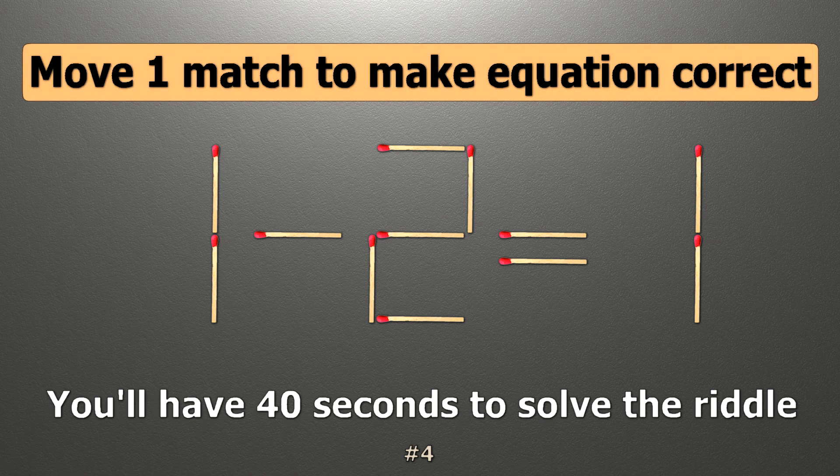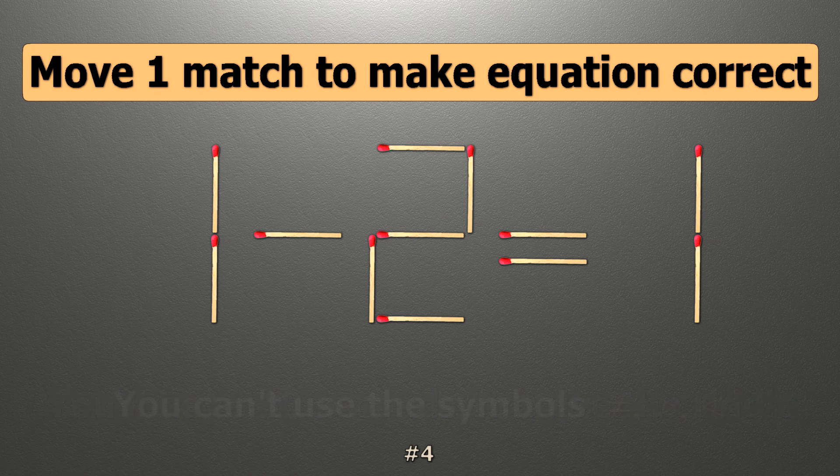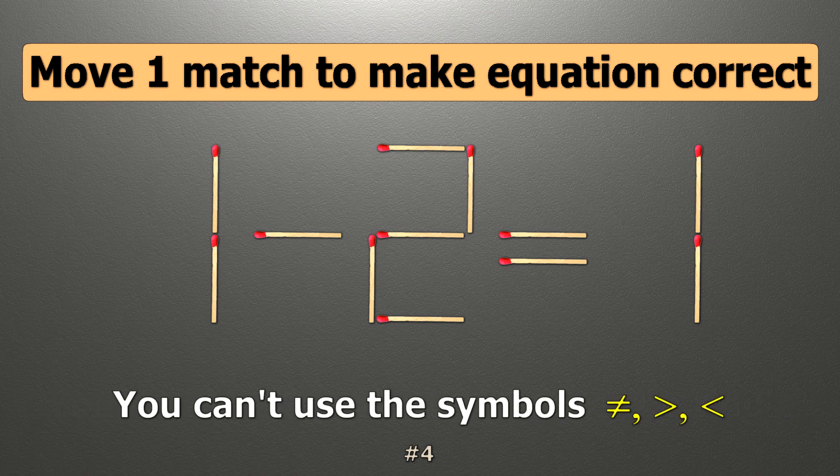We have the equality 1 minus 2 equals 1. Our equality is wrong. We need to move one match to make our equality correct.